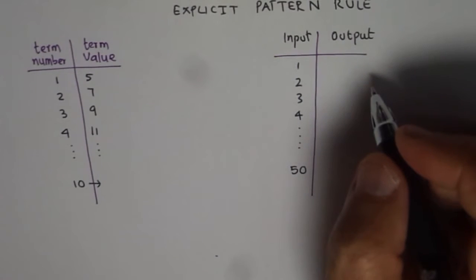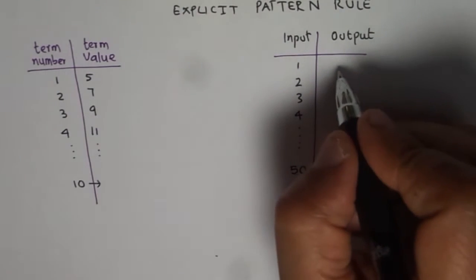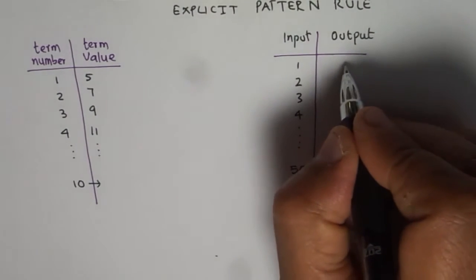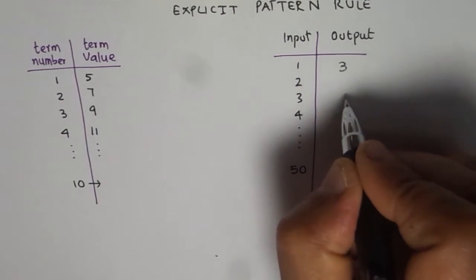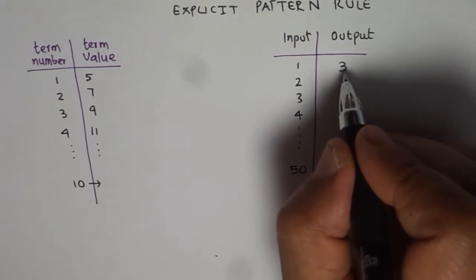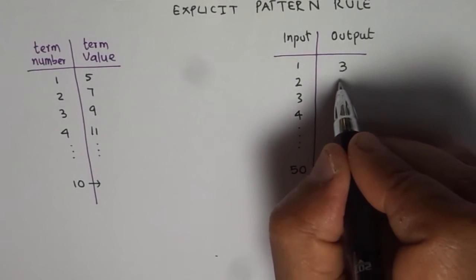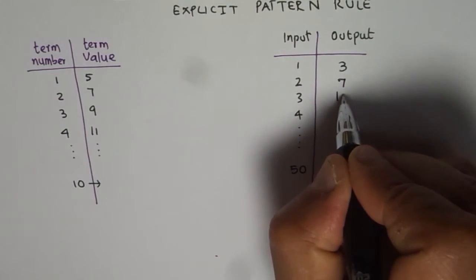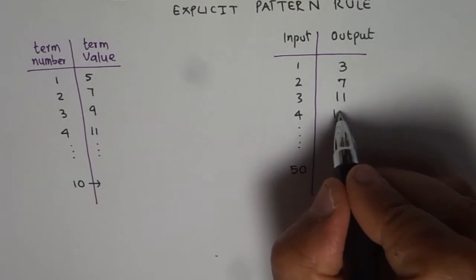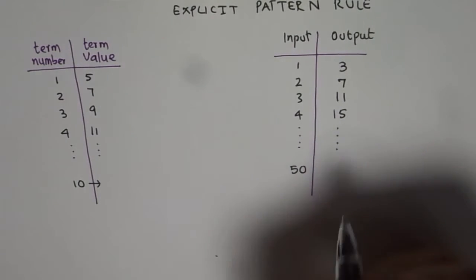And let us say that the term number or the value is 3 and let us increase this by 4 for example. So 3 plus 4 is 7, 7 plus 4 is 11, 11 plus 4 is 15.